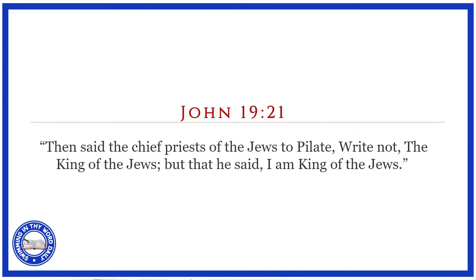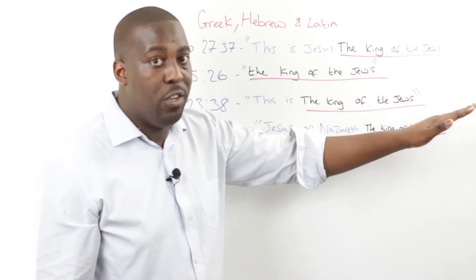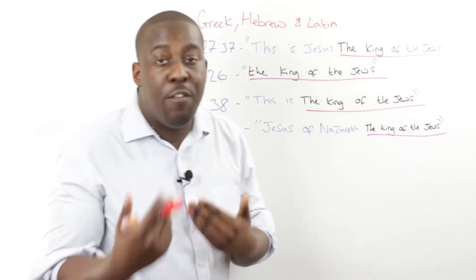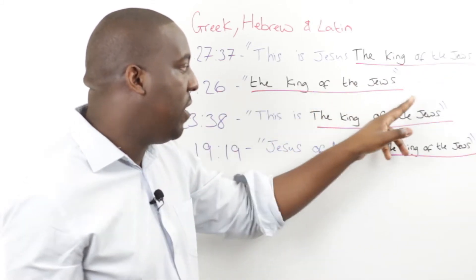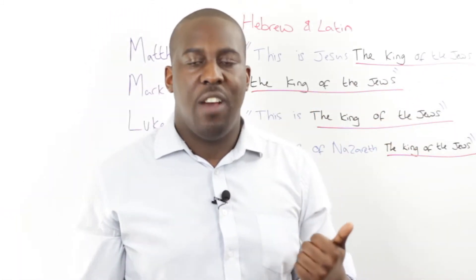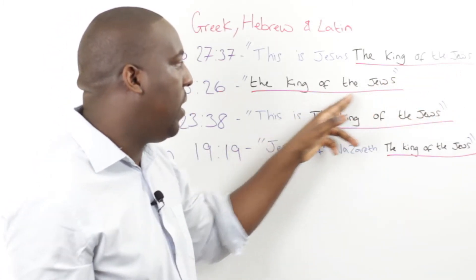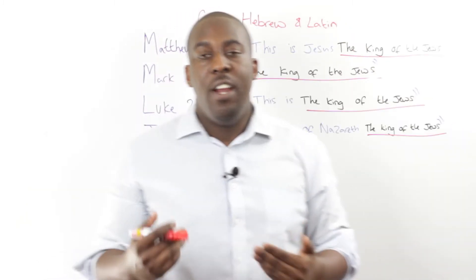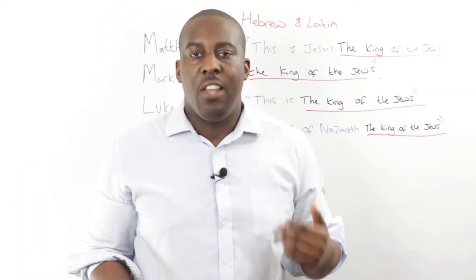Looking across all four accounts, what is the significant thing each writer wanted us to highlight? The King of the Jews. And if you didn't get it just from reading those four references, what did the authorities say? They said, 'Take this part off — don't write this.' That was the point of contention. We know who was crucified; the Bible makes that clear. And Pilate's declaration that he was the King of the Jews was obviously an annoyance to them.